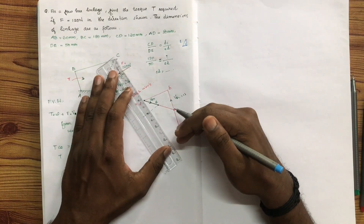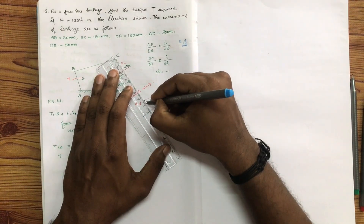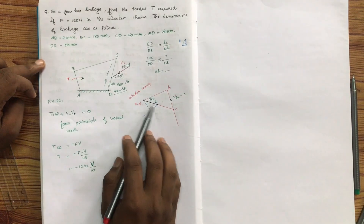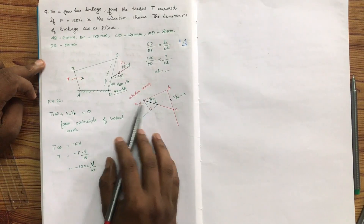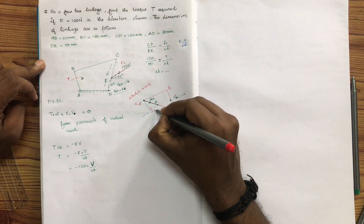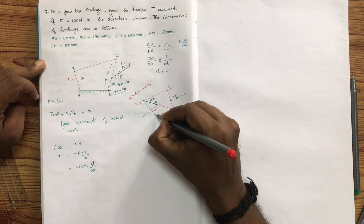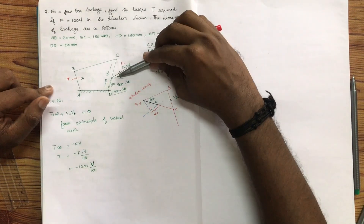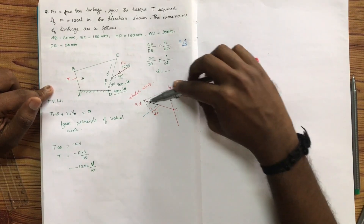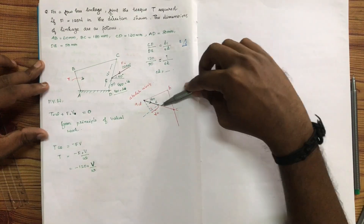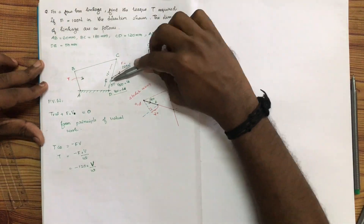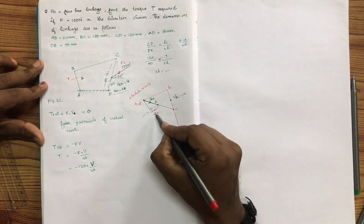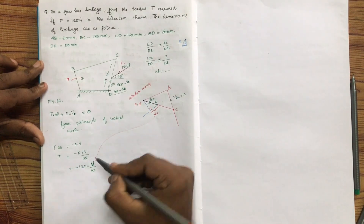The two components are mutually perpendicular. I put a parallel line and construct a right-angle triangle. The resultant velocity is V. The velocity component in this direction is where I apply the force. VED is the result, and VED is parallel to this force. The velocity component is parallel to this force.